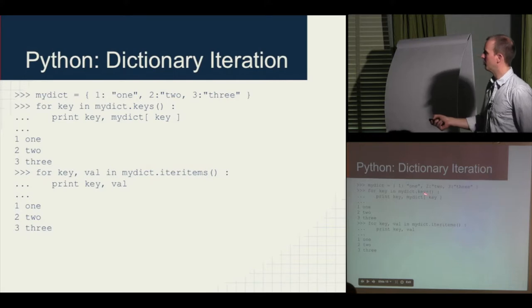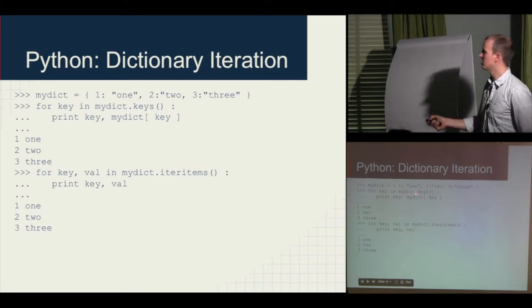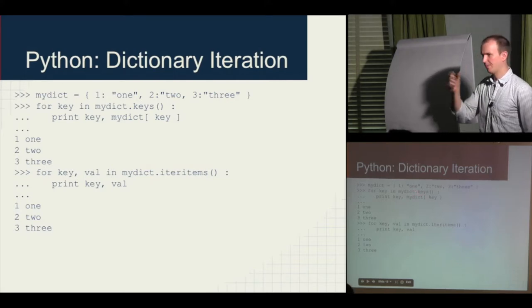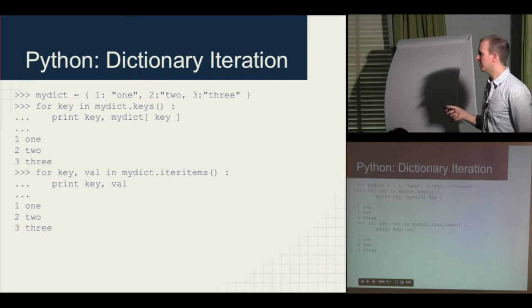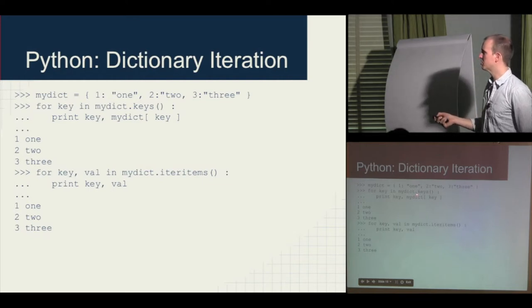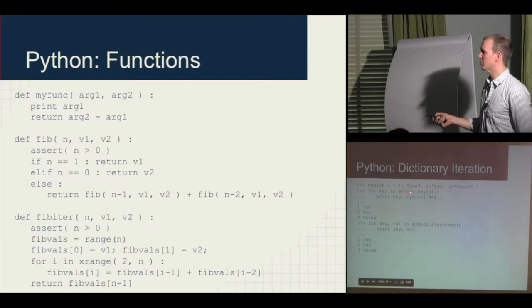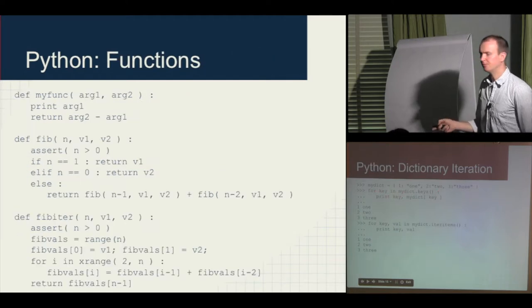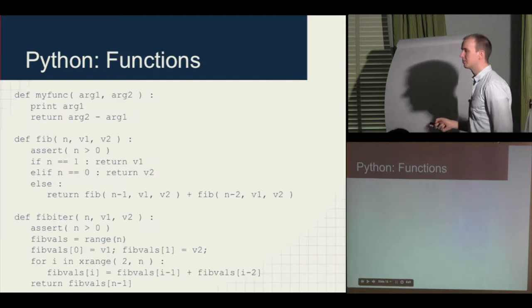A useful shortcut: in Python 2.6 at least, you don't need .keys() — you can just say 'for key in my_dictionary' and it works.